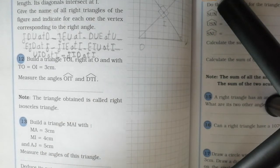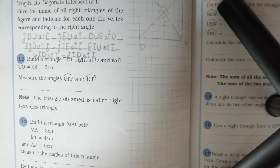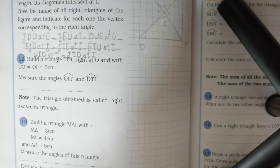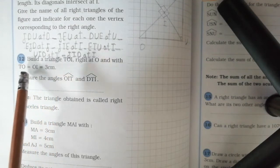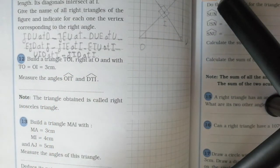Right at O means the right angle is at point O, and angle TOI equals 90 degrees. TO and OI equal 3 cm. TO and OI are the sides of the right angle.